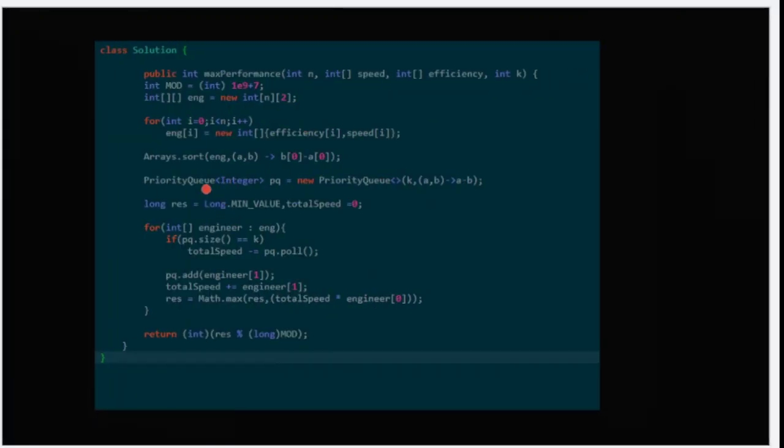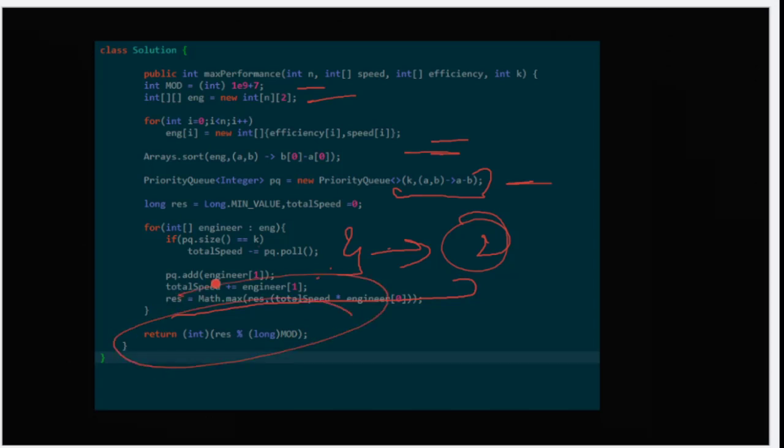Let's see the code. What we are doing: we took an array, we took the mod, created the 2D array, then sorted it, then created a priority queue. We start adding the speed values, checking if size exceeds k. Once removed, you'll add it up for the k value because we need at most this value. The result will always be the maximum. At the end, you'll return the mod of this.